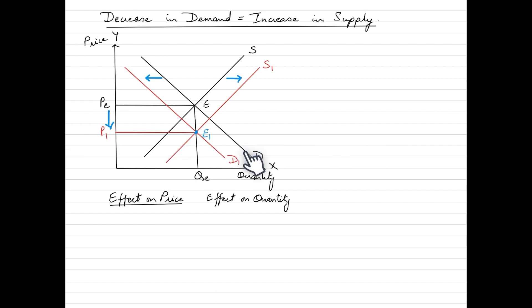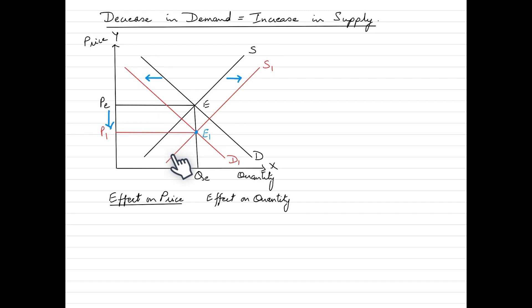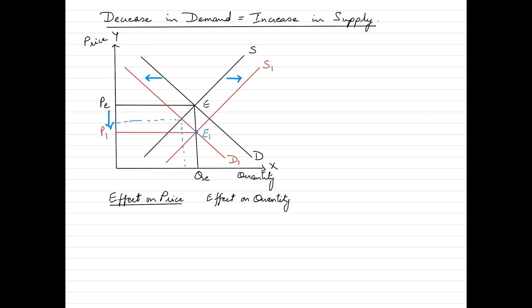As the demand decreases, we see the demand curve shifting to the left. This shift puts a downward pressure on the equilibrium price, and the quantity also goes down. With fewer consumers willing to buy at the same price, producers may need to lower their prices to attract more buyers. A decrease in demand leads to a decrease in both price and quantity.